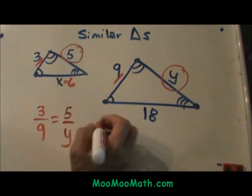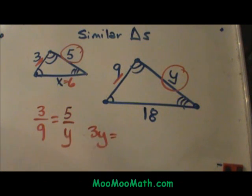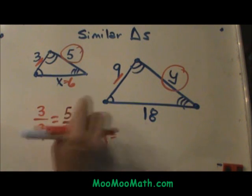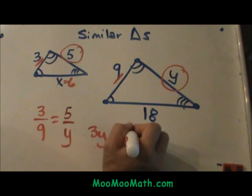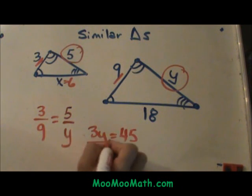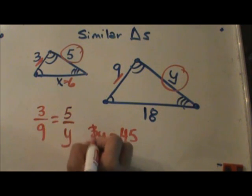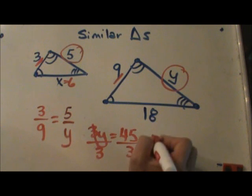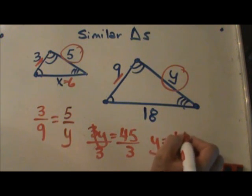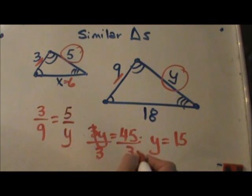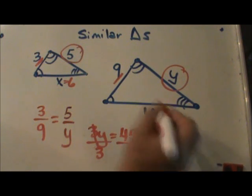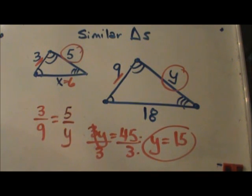3 times y is 3y. Set it equal to 9 times 5, which is 45. Now let's divide both sides by this coefficient of 3. So y is 15 because 45 divided by 3 is 15. If you need to grab your calculator you can. So that is how you set up and solve similar triangles. Hope this was helpful.